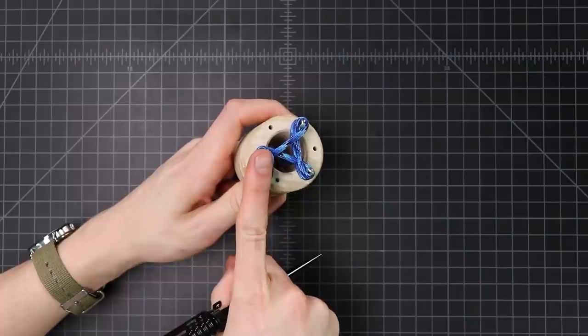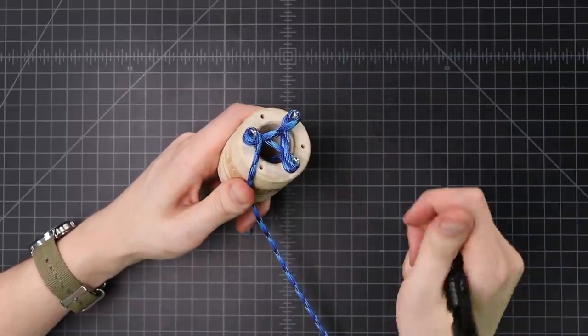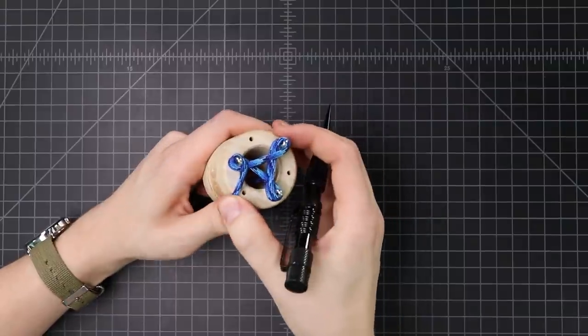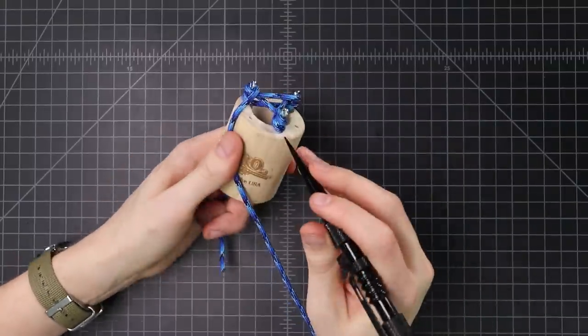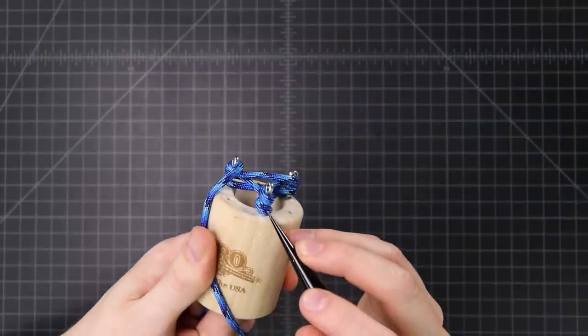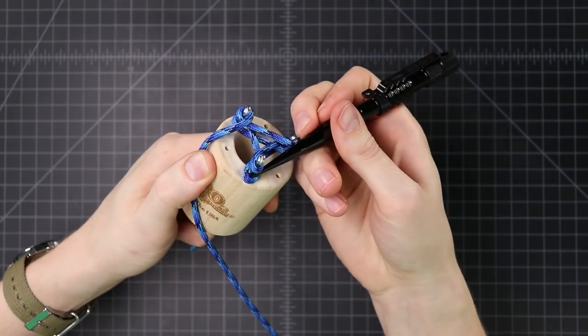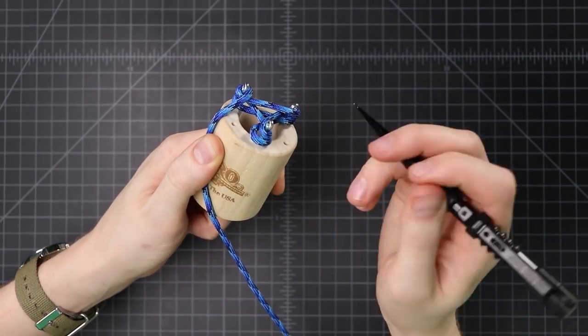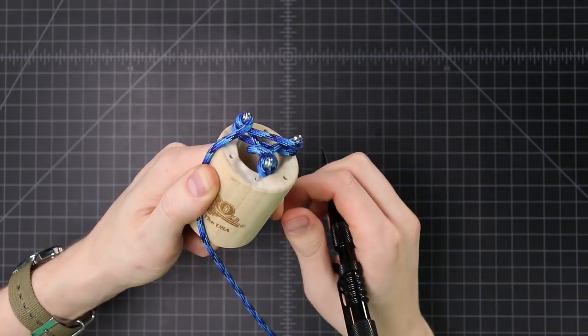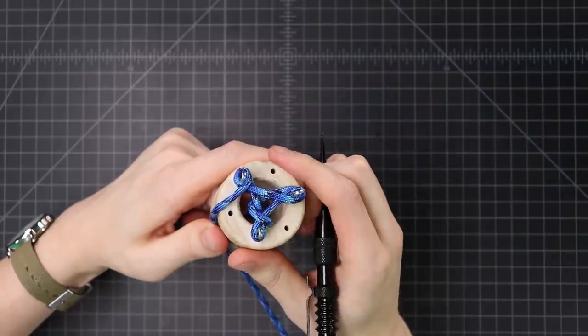Our cord is coming off of this peg right here. So we're gonna start to the one next round going counterclockwise. So I'm just gonna grab that bottom loop. So I've got the two loops on there. I'm gonna grab the bottom one, pull up some slack.